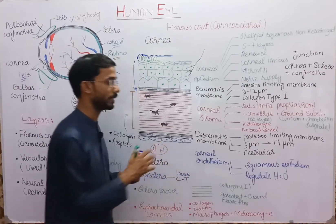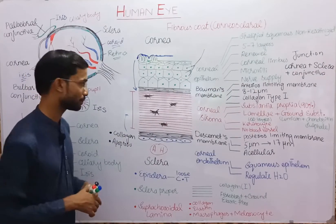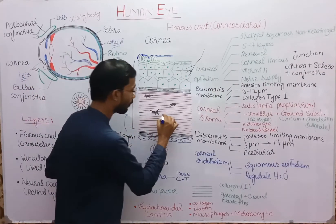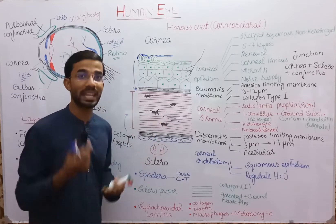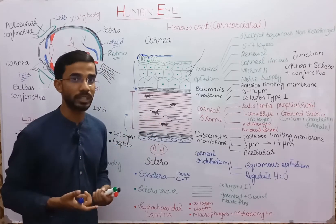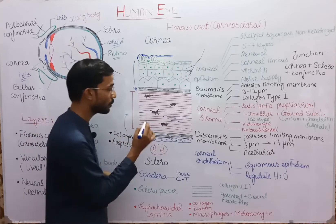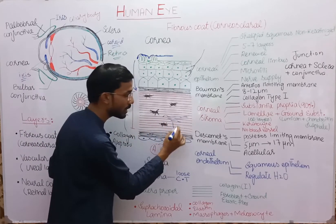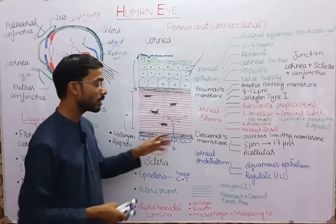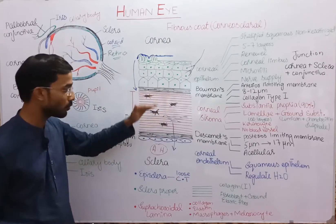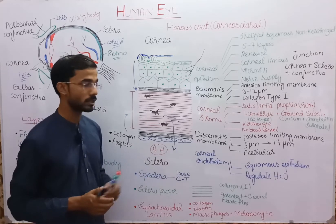The last layer is the corneal endothelium, which is basically squamous epithelium and it regulates water. When excess water is present in the corneal stroma, it causes opaqueness and results in defective vision. The endothelium removes this excess water — it moves through Descemet's membrane into the aqueous humor — so water from the corneal stroma moves into the aqueous humor, regulating corneal hydration.